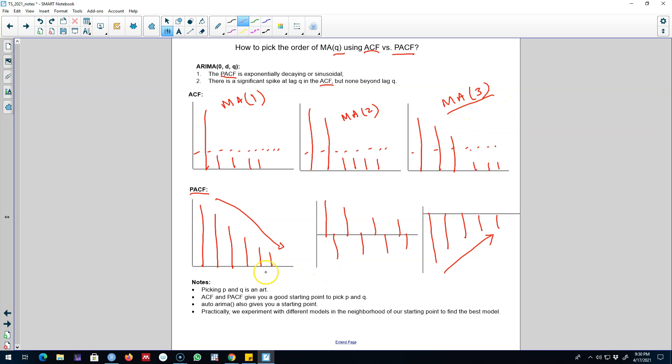One thing to notice is that picking P and Q using ACF and PACF is an art and only gives you a good starting point to pick P and Q. And we get the same thing using the auto-arima function.